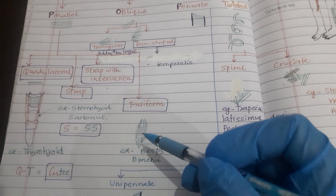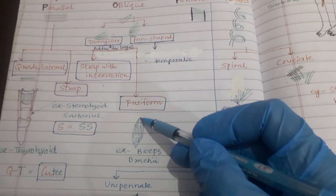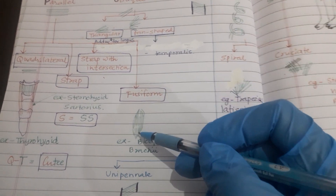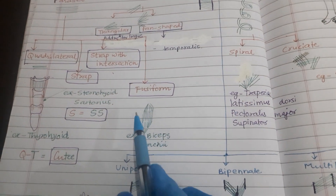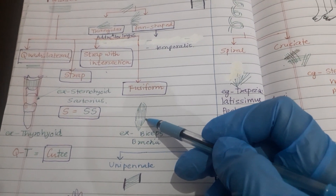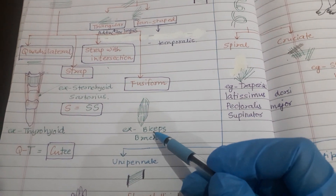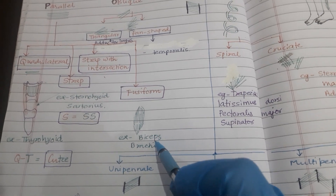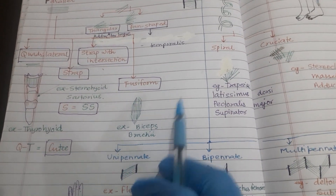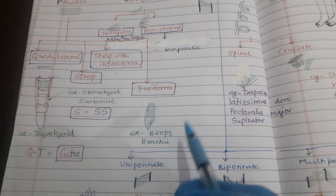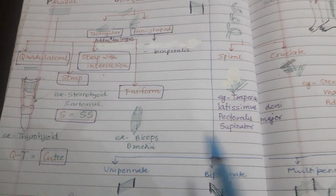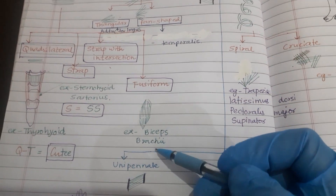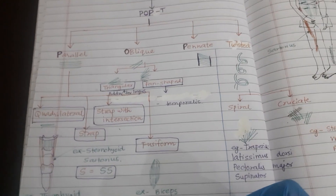The last parallel variety is fusiform. In this type the parallel architecture converges at the initial and terminal points, giving it a fusiform shape. It has the highest range of movement. The example is biceps brachii — the person who gets strong biceps can move with great strength. So the example of fusiform is biceps brachii.